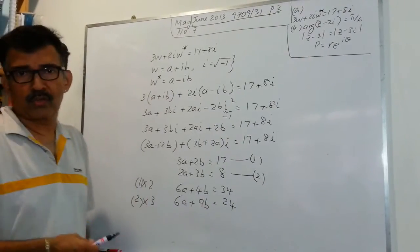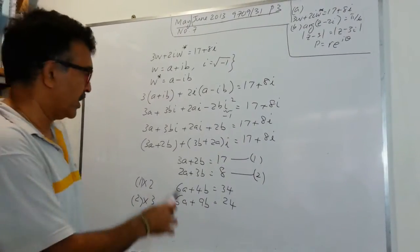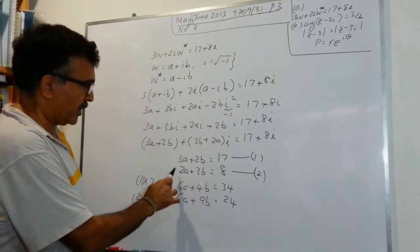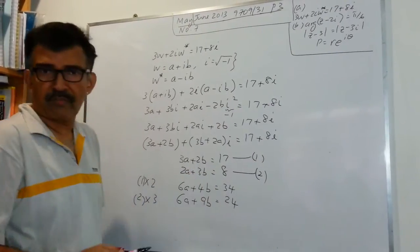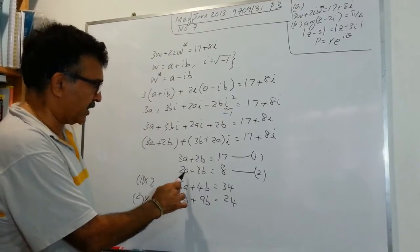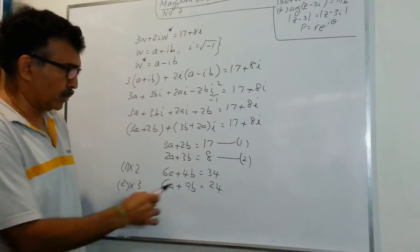So all I am doing is I am trying to solve a system of simultaneous equations. So equation 1 times 2, we will have 6A plus 4B equals 34. And equation 2 times 3, we will have 6A plus 9B equals 24.